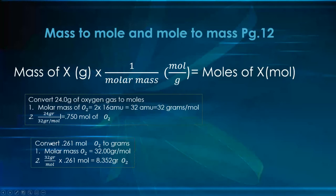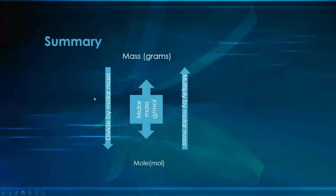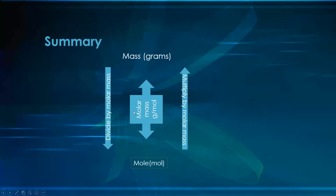Going the other way: you have 0.261 moles of oxygen gas O2 and want to know how many grams that is. One mole of oxygen gas is 32 grams. So multiply 32 grams times 0.261 moles and we get 8.352 grams of oxygen gas. It's just saying I have a little more than a quarter of a mole; one mole is 32 grams, so I should have a little more than eight. If you have mass and need to get moles, divide the mass by the molar mass. If you have moles and want to find the mass, multiply by the molar mass.